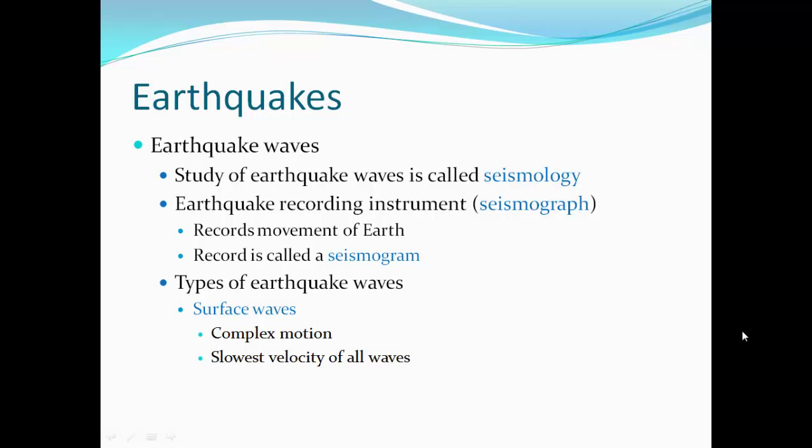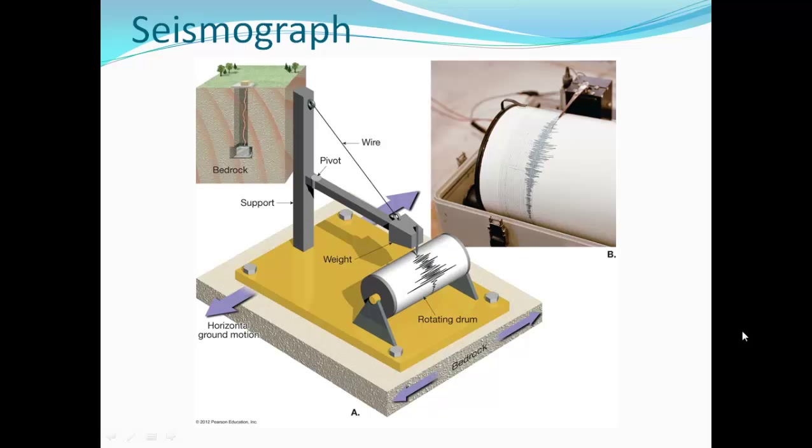The study of earthquake waves — the energy produced by earthquakes — is called seismology. Earthquake recording instruments called seismographs record the movement of Earth, and the record produced is called a seismogram. There are several types of earthquake waves. Surface waves have a very complex motion and move slowest of all the waves. Here is a diagram and picture of a seismograph.